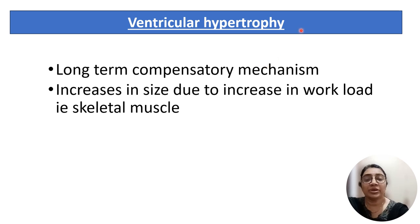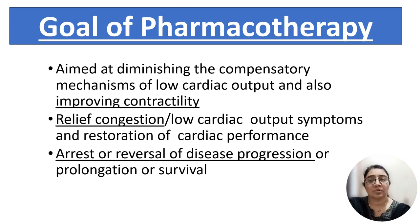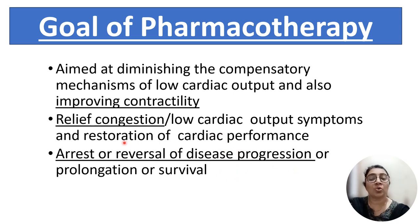Ventricular hypertrophy is also one of the compensatory mechanisms. After long-term compensation, the size of the heart increases due to increased workload on the cardiac muscles. The shape of the heart changes to globular and ventricular hypertrophy occurs. The goal of pharmacotherapy in heart failure is aimed at diminishing the compensatory mechanisms of low cardiac output failure, improving contractility of the heart, relieving congestion, improving low cardiac output symptoms, restoring cardiac performance, and arresting or reversing disease progression or prolonging survival.